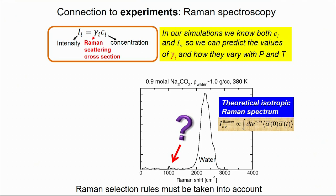From the peak position, you know what the species are, and from the peak intensity, you may know the concentration of species — if you know the Raman scattering cross-section coefficient. To know relative concentrations like mole fraction or mole percent, at least you need to know the gamma ratio. The current situation is that at ambient conditions we often know this gamma ratio, but at extreme pressure and temperature conditions we know very little. This is exactly what we can help with — because in our simulations we know the concentration, and if we can calculate the intensity, we can calculate this gamma ratio and use it to interpret experimental findings.